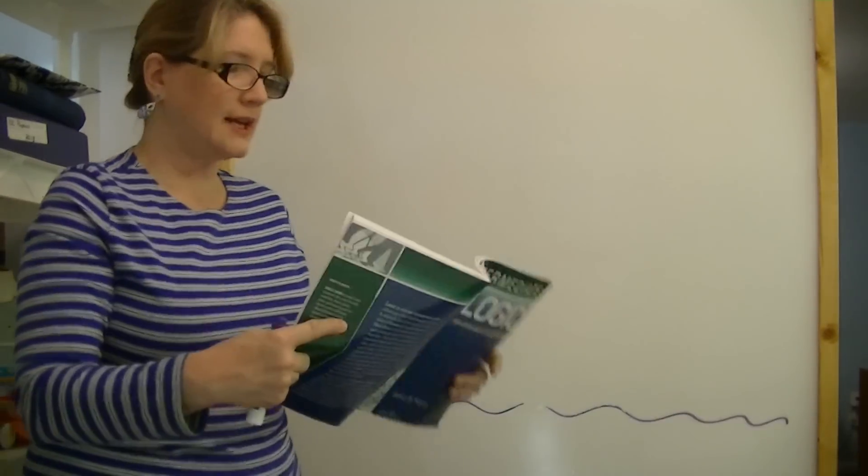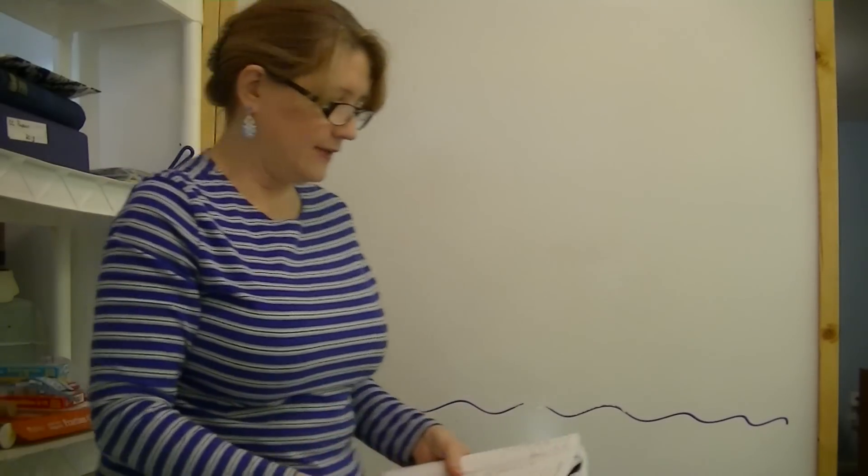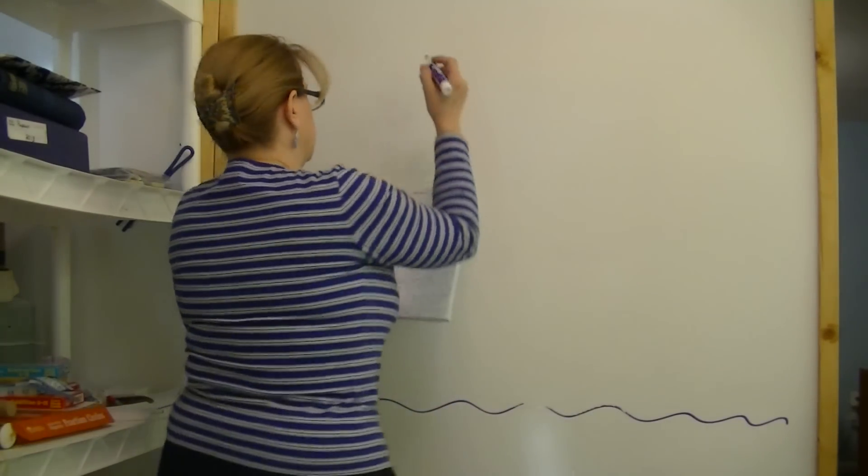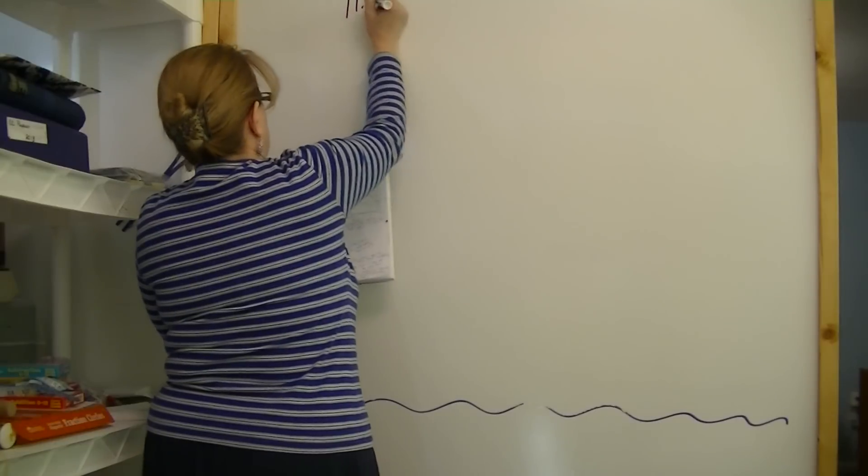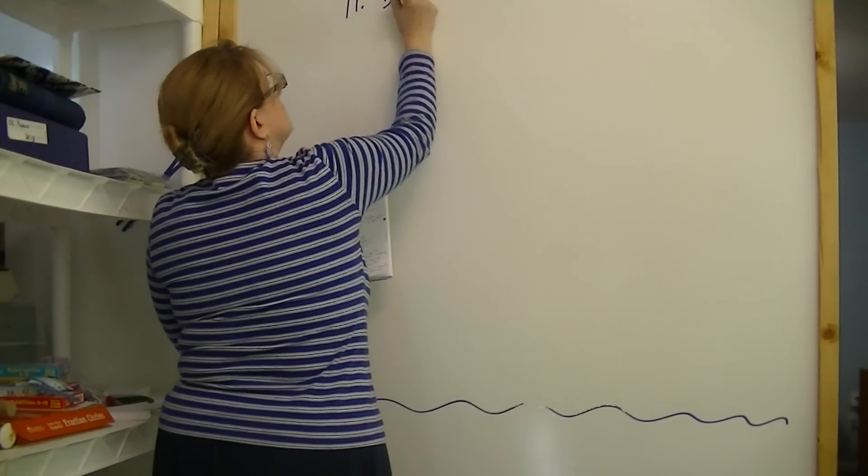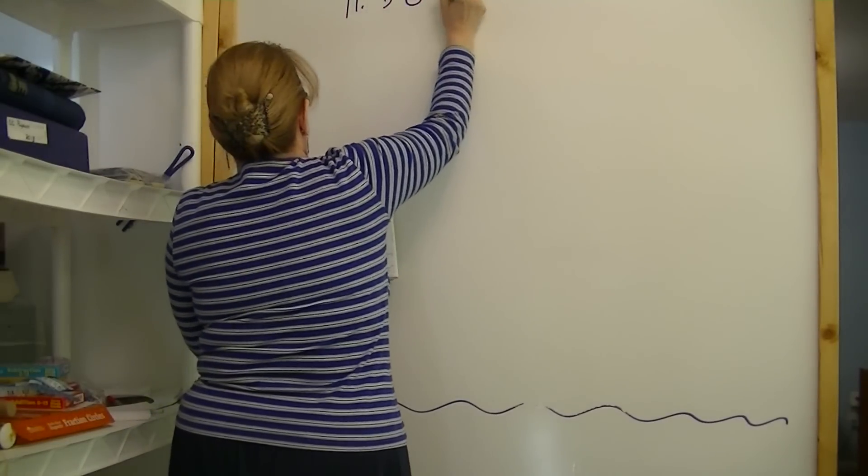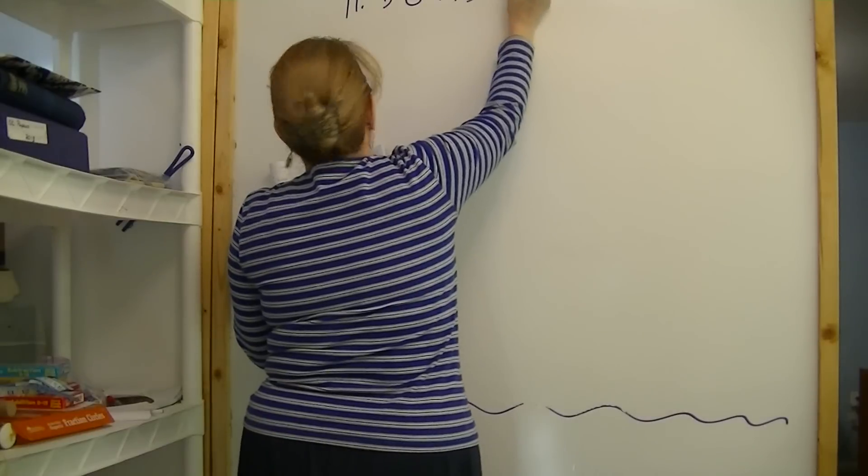And those would be rules of replacement that you would use to change the operator. The rules of inference are not used to change operators. Those are actually just used to prove your logic, that it logically follows. Now, you have a few in here that are not very logical in 17. And I'll talk to you about that in a little bit. But let's look at number 11. 11 is kind of a long one.